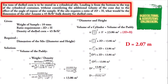Now, to find the value of the height, we know that the ratio requirement as stated in the problem was height equals twice the diameter. With that, we substitute the value for the diameter of 2.07 meters, giving us height equals 2 times 2.07 meters. Solving, we get a final value for the height of 4.14 meters. That is both dimensions for our cylindrical silo: a diameter of 2.07 meters and a height of 4.14 meters.